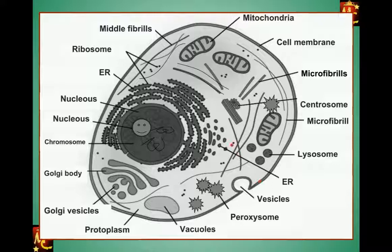If we look at the structure of a eukaryotic cell, this is a simple diagram. Starting from the nucleus — here is the nucleus, and inside the nucleus there is also a dense body which is the largest structure inside the nucleus, called the nucleolus. The nucleus has a chromatin network; it is filled with chromosomes or DNA — simply put, it is filled with genetic material.